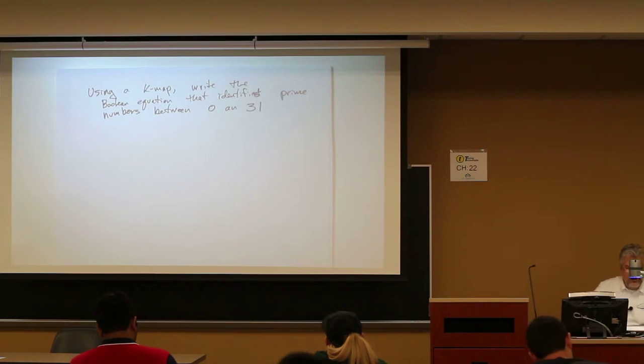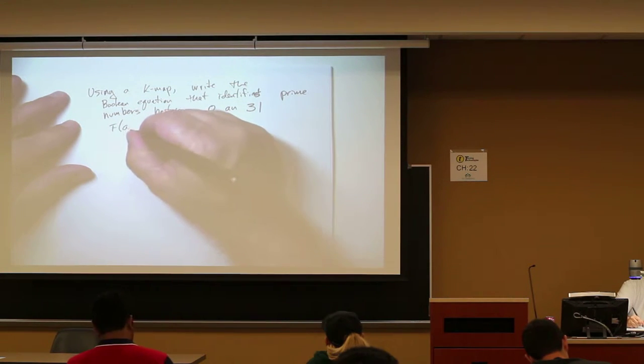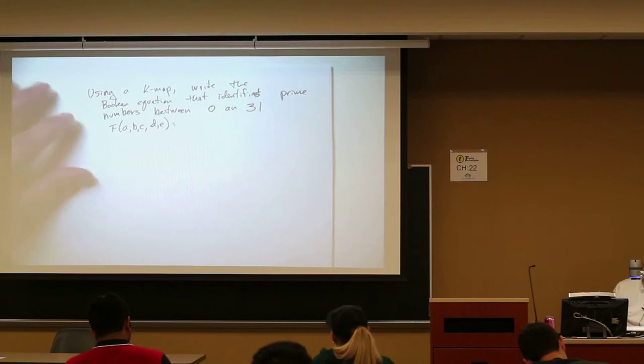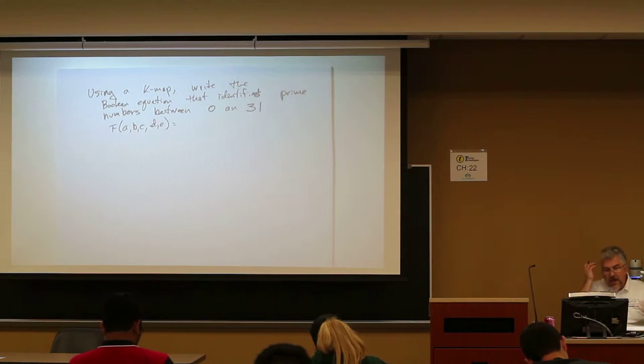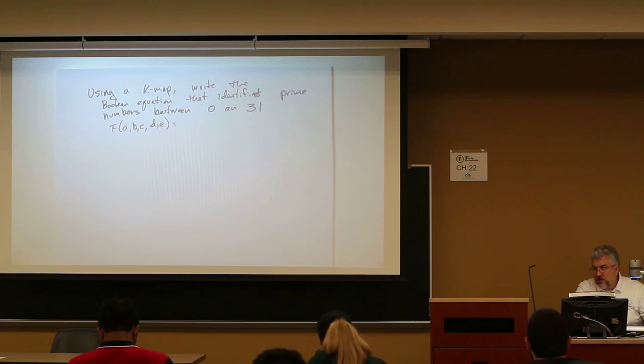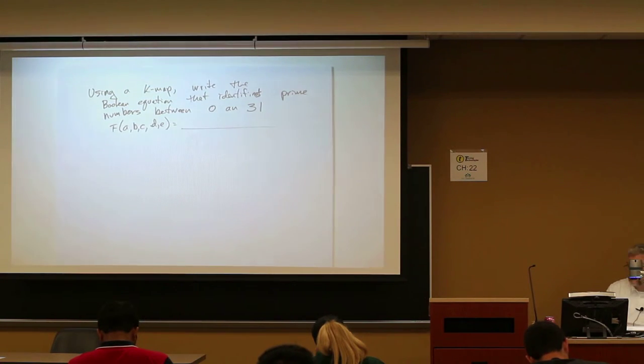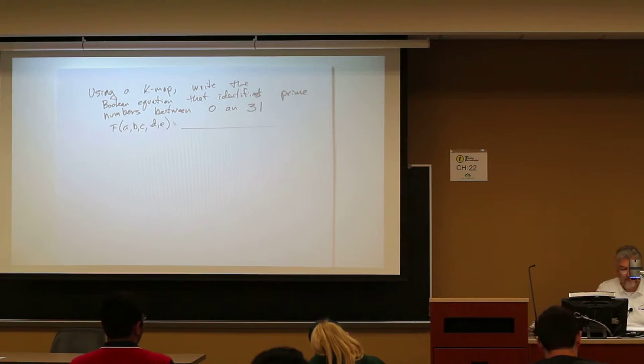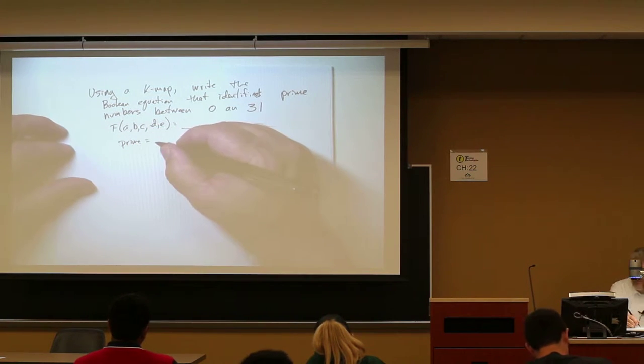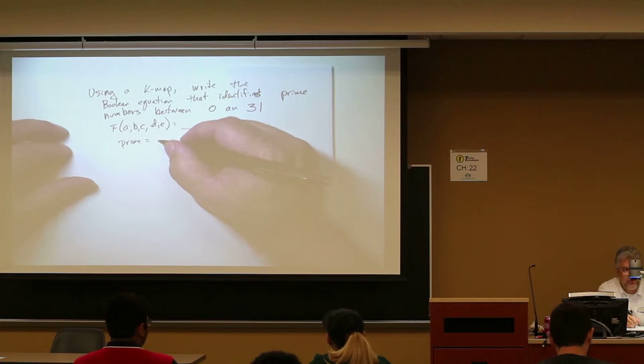So we're going to have a function that will be a, b, c, d, e as input and it's going to be equal to something and each one of the min terms is going to be associated with a prime number. And so that's what our objective is to find that. So let's start out by saying, what are our prime numbers?